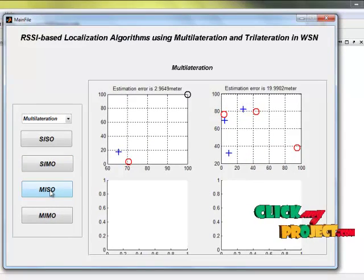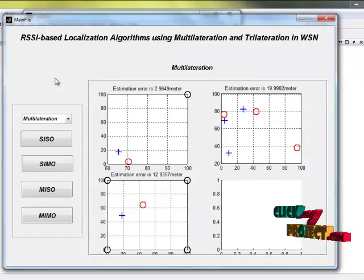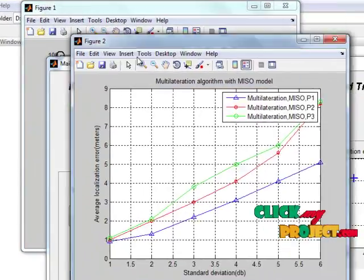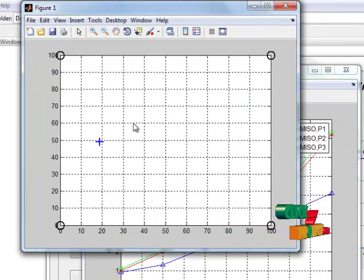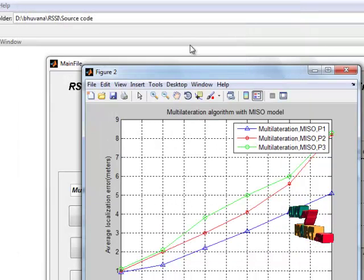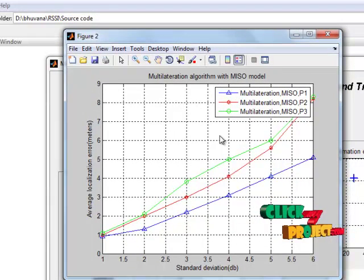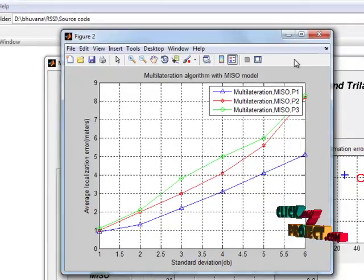Then MISO which means multi input with single output. See the inputs are multiple and the output is single. This is the graph plotted for MISO, that is multi input with single output.